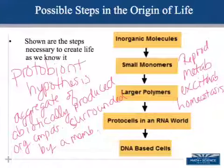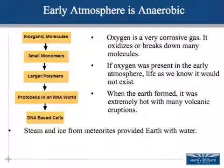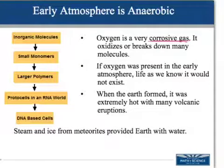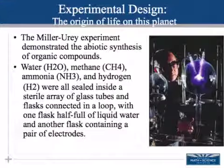There are a number of experiments that walk through the steps of the protobiont hypothesis. Keep in mind, the early atmosphere was anaerobic — no oxygen — and there was a lot of volcanic activity. Oxygen is very corrosive, and if oxygen had been present at that time, life as we know it would not exist. Water came from steam and ice from meteorites.